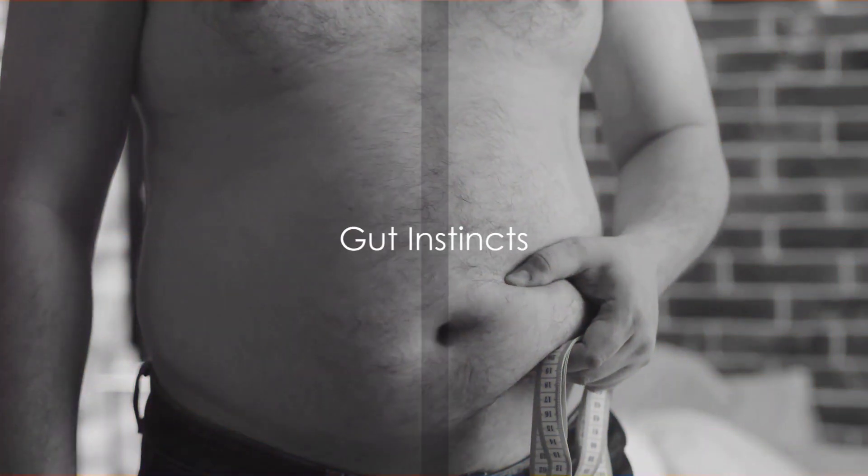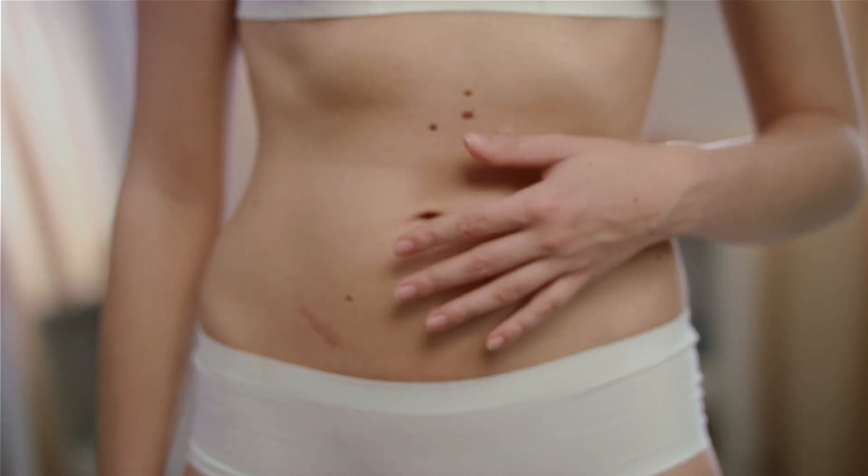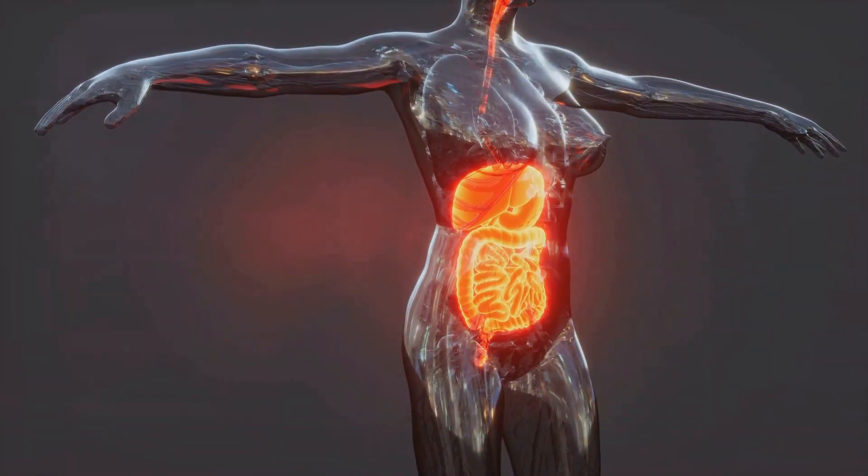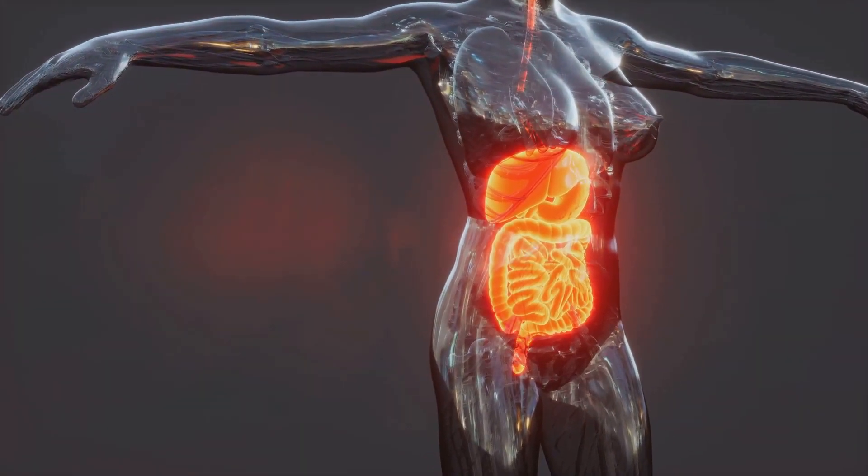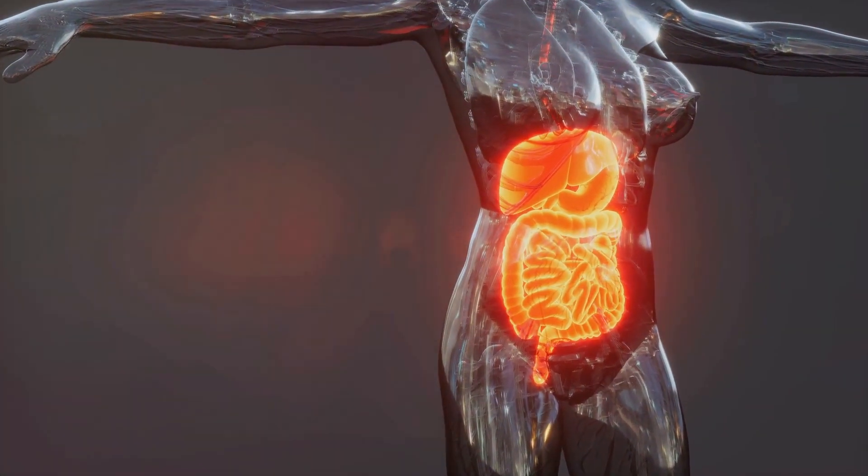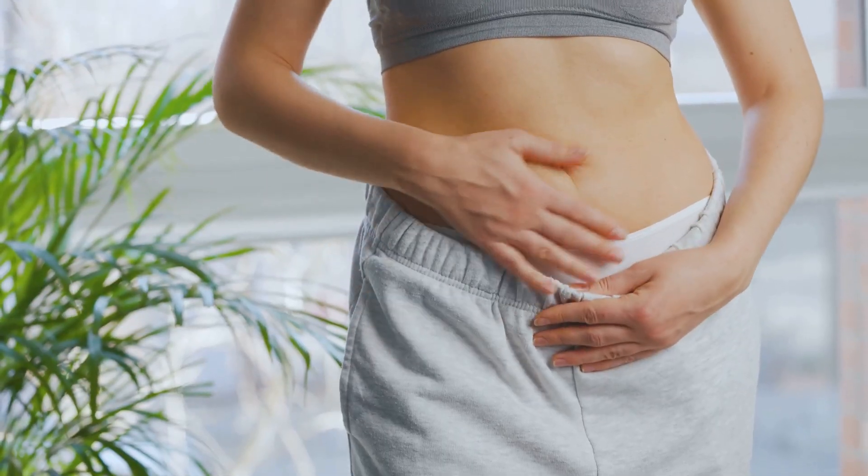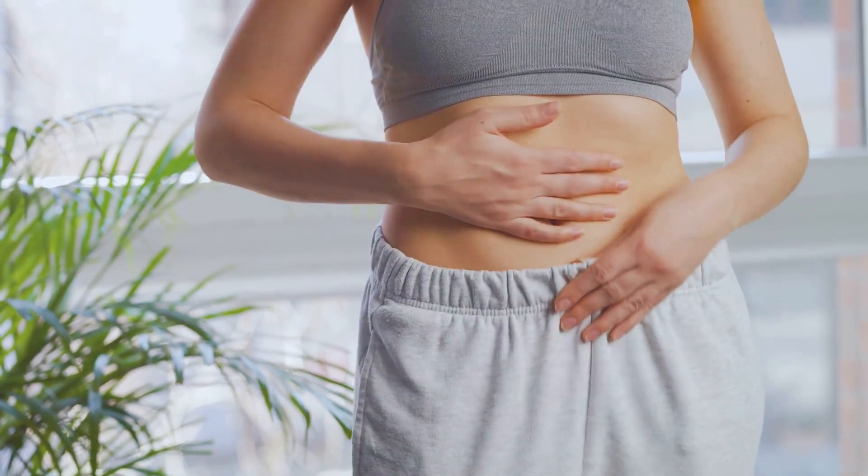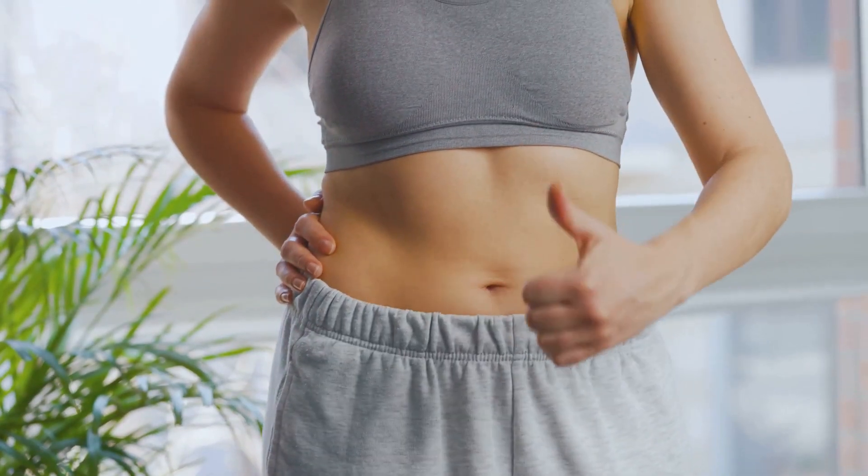Ever had a gut feeling about something? Well, your gut is more intelligent than you think. Nestled right inside your stomach is a second brain, a complex network of around 100 million neurons. This intricate system not only helps to regulate digestion but also influences your mood and overall health.